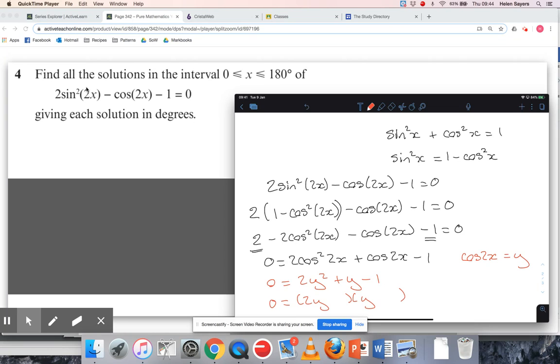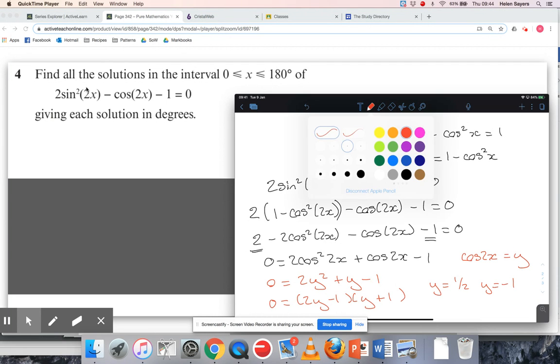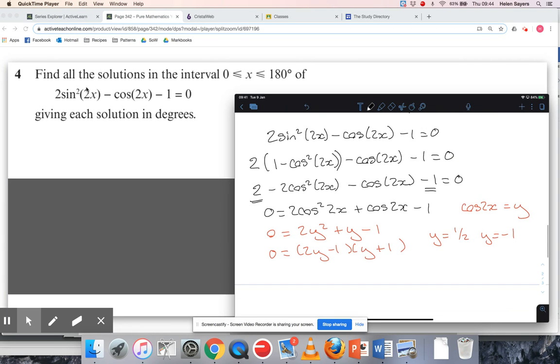I'm going to have plus 1 there and minus 1 there. So I've got y equals 1 half or y equals minus 1. But you might not have used the substitution y, you might just have factorized it in terms of cos, and that's fine. Either way, you're going to end up with cos 2x equals 1 half or cos 2x equals minus 1.